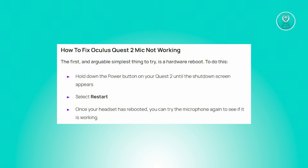Additionally, confirm that your PC has been granted permissions to access the microphone. To do this, press the Windows button and type microphone privacy in the search box. Select microphone privacy settings, click change, and grant microphone access for this device.